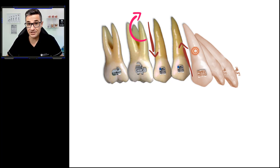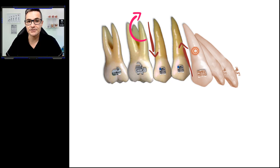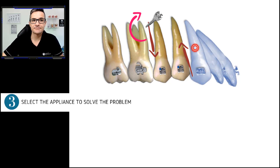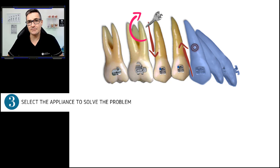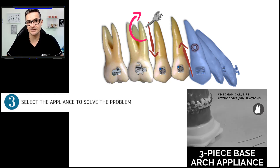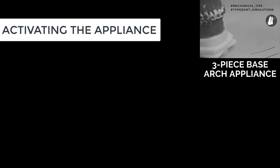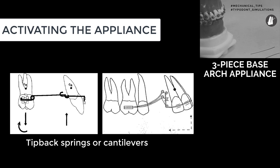Considering the fragility of the patient's dentition, I will certainly opt to use absolute anchorage. So, two mini-implants were installed in the buccal region as the sources of anchorage. Step three is the choice of the appliance, a decision that we have already made according to our desired force system. In step four, we will activate the appliance. The two main ways to perform the activations are by using bilateral tipback springs or cantilevers.